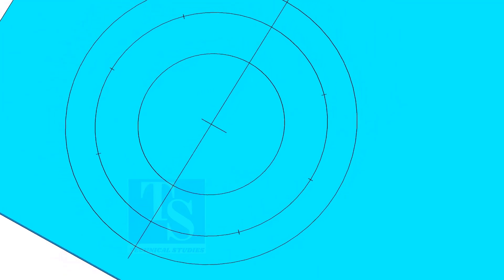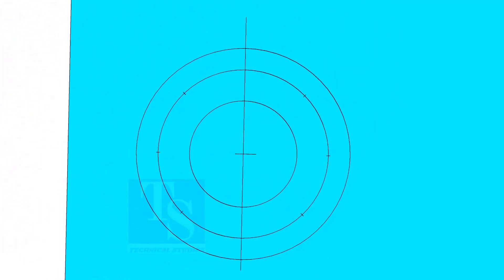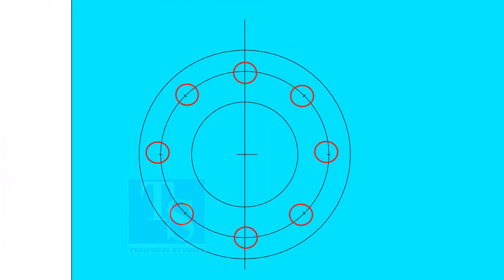Punch mark all the 8 divisions and draw circles of the diameter of the bolt holes if you are drilling the holes with a normal drill bit.